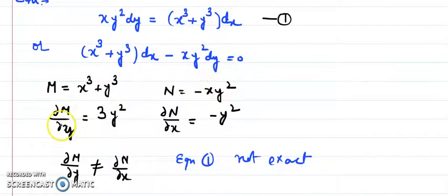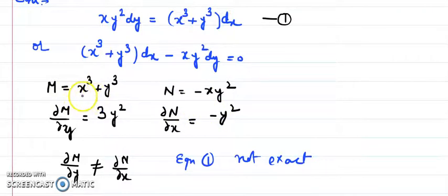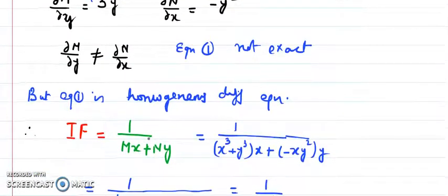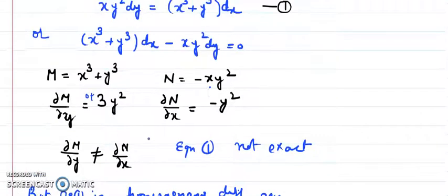Next, find the partial differentiation of M with respect to y and N with respect to x. Treating x as constant, ∂M/∂y = 0 + 3y². For N, differentiating −xy² with respect to x gives −y². Since 3y² ≠ −y², these two quantities are not equal, so the given differential equation is not exact.